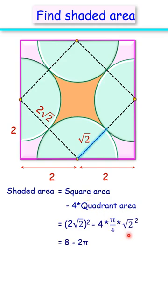Solving it to get as 8 minus 2 pi or 1.72 cm square, and that's our answer.